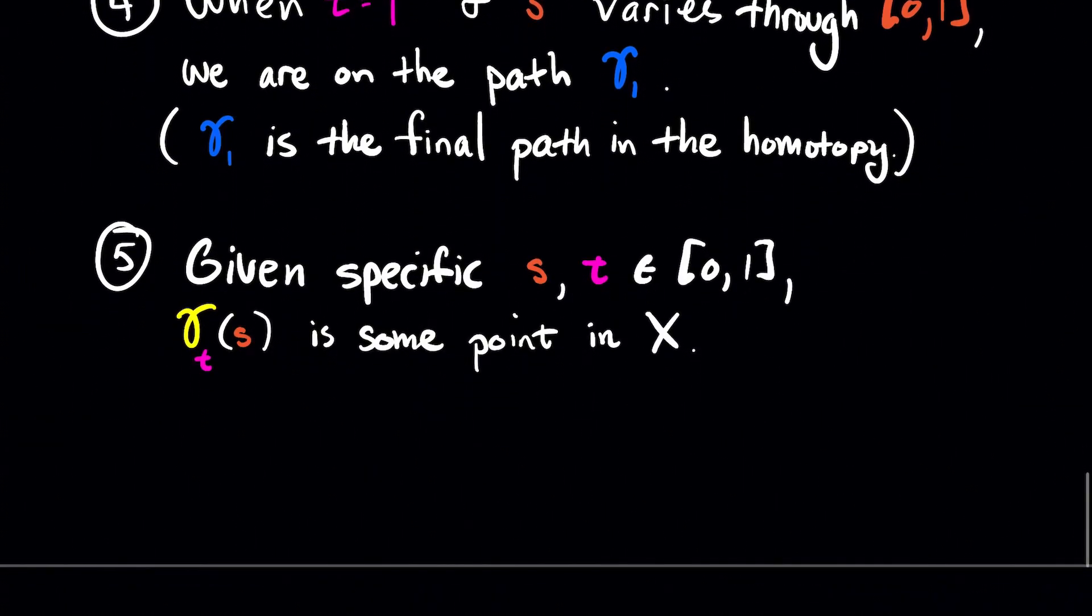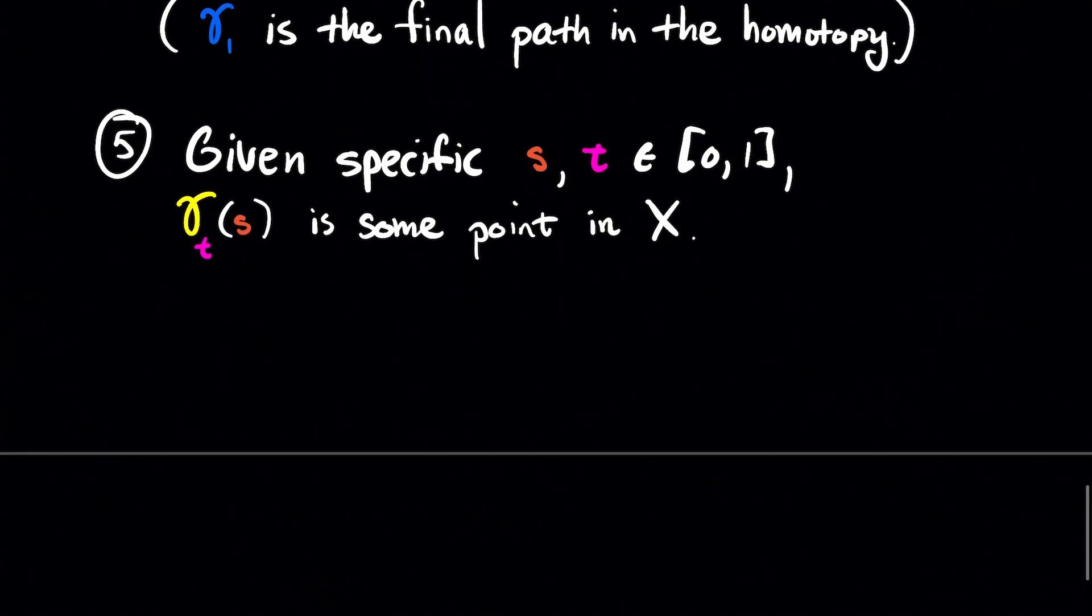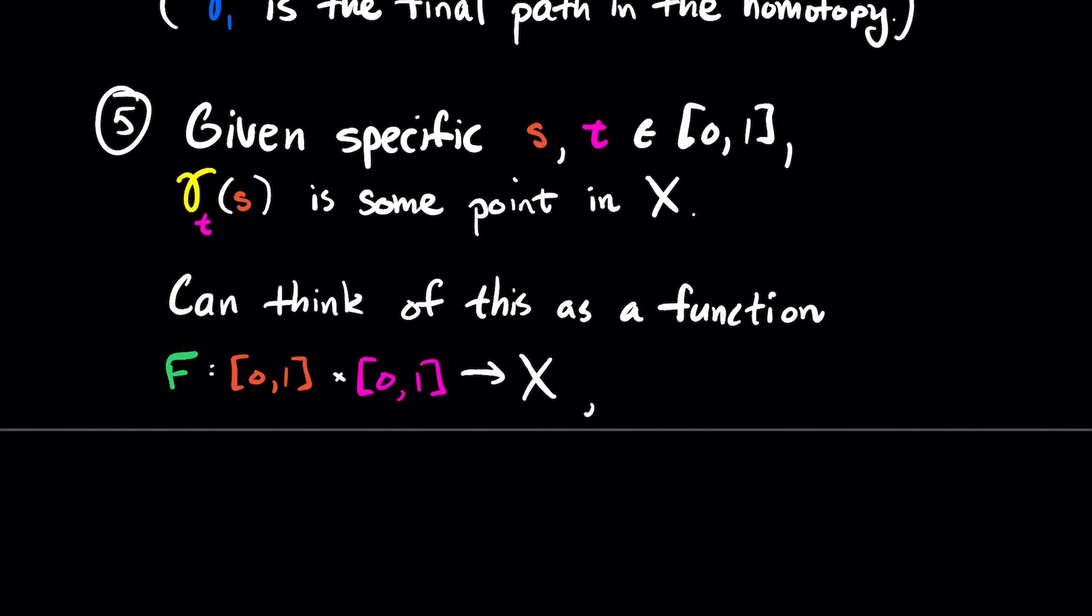Number 5: If you're given a specific S and T, two real numbers between 0 and 1, then gamma sub T of S is just some point in your topological space. And we are going to look at this in a little bit more detail. That idea that we are associating an S and a T to a point in our space, we can think of that as a function.